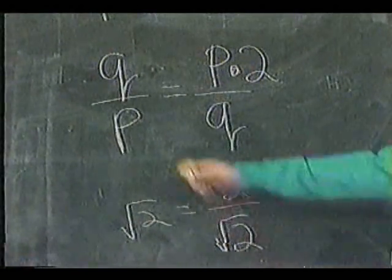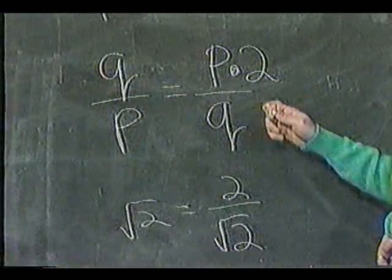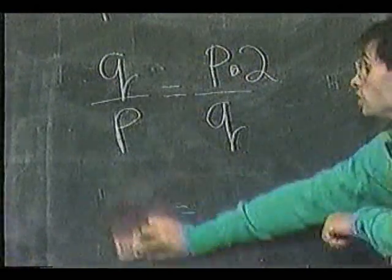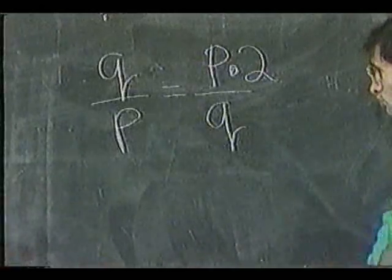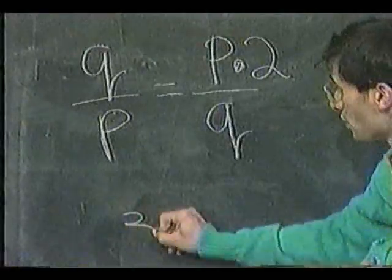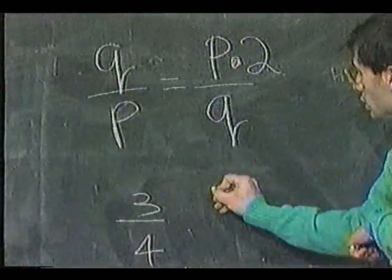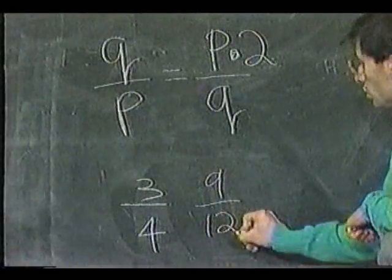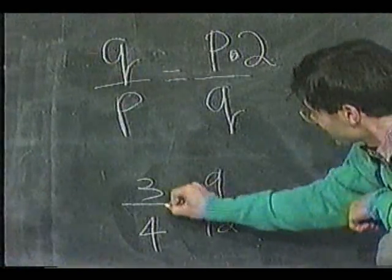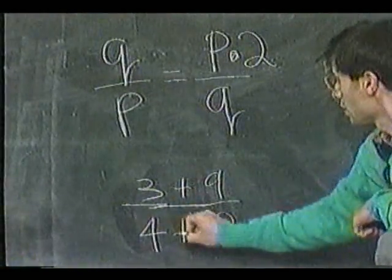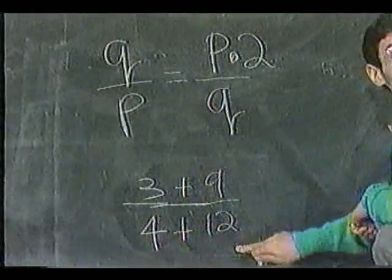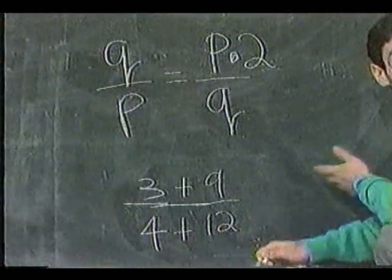So what I've got now is two fractions which are equal to each other. And there's a funny thing you can always do with two fractions when they're equal to each other, and you may not have thought of this before, but if I have, say, 3 quarters and 9 twelfths, which are equal to each other, then I can extend this line through here and put these plus signs in, and I have 3 plus 9 equals 4 plus 12, which is 12 sixteenths, which is also 3 quarters.